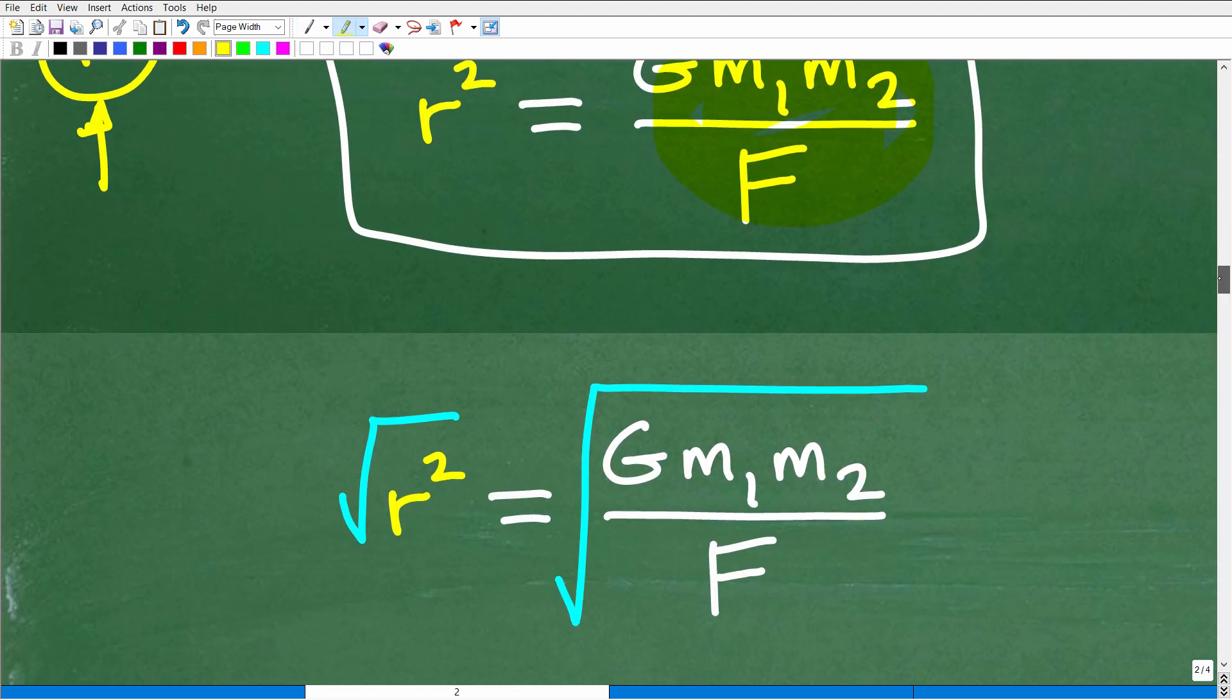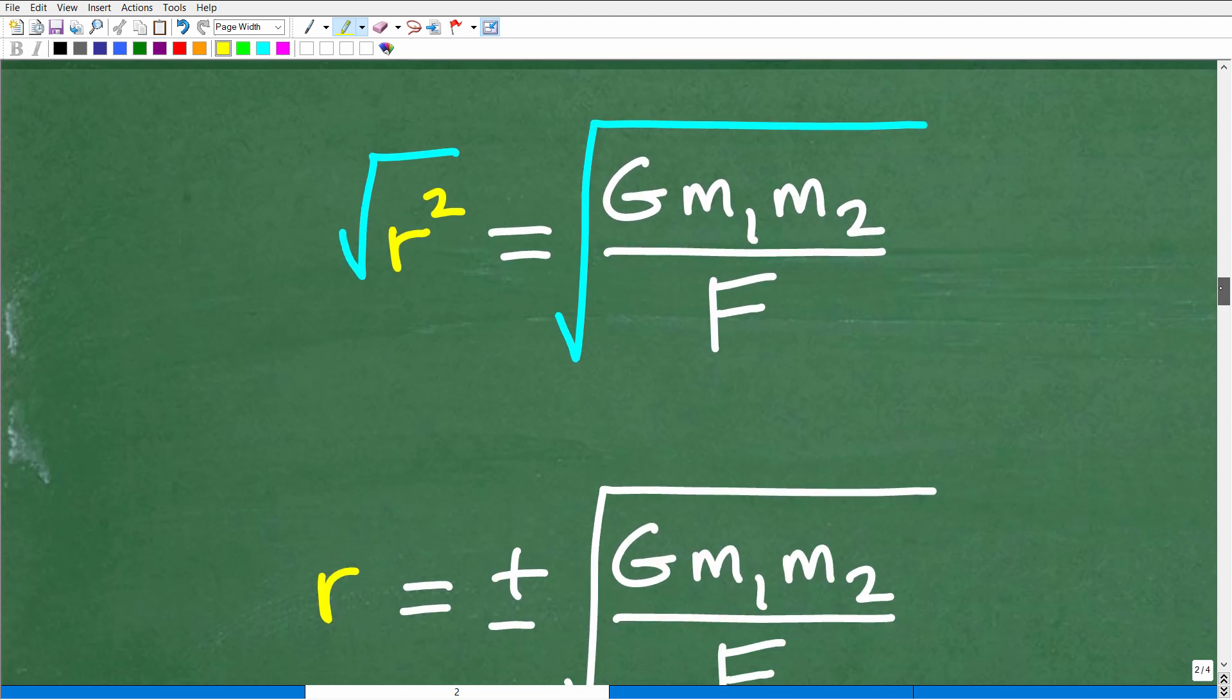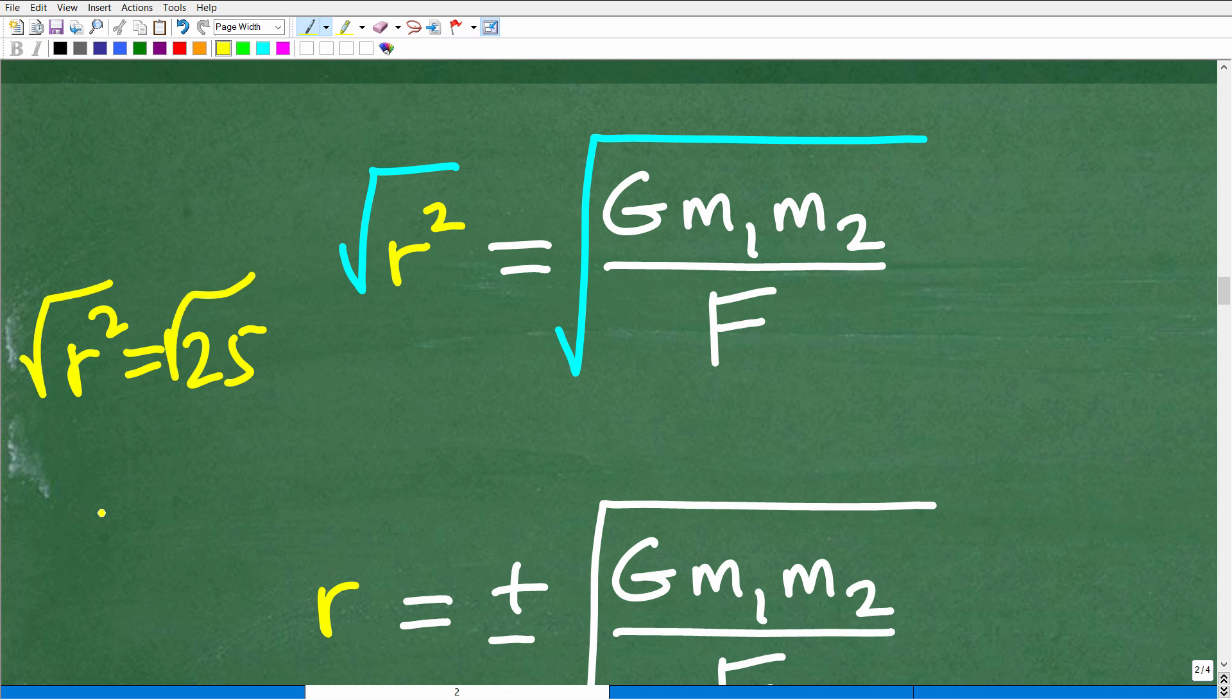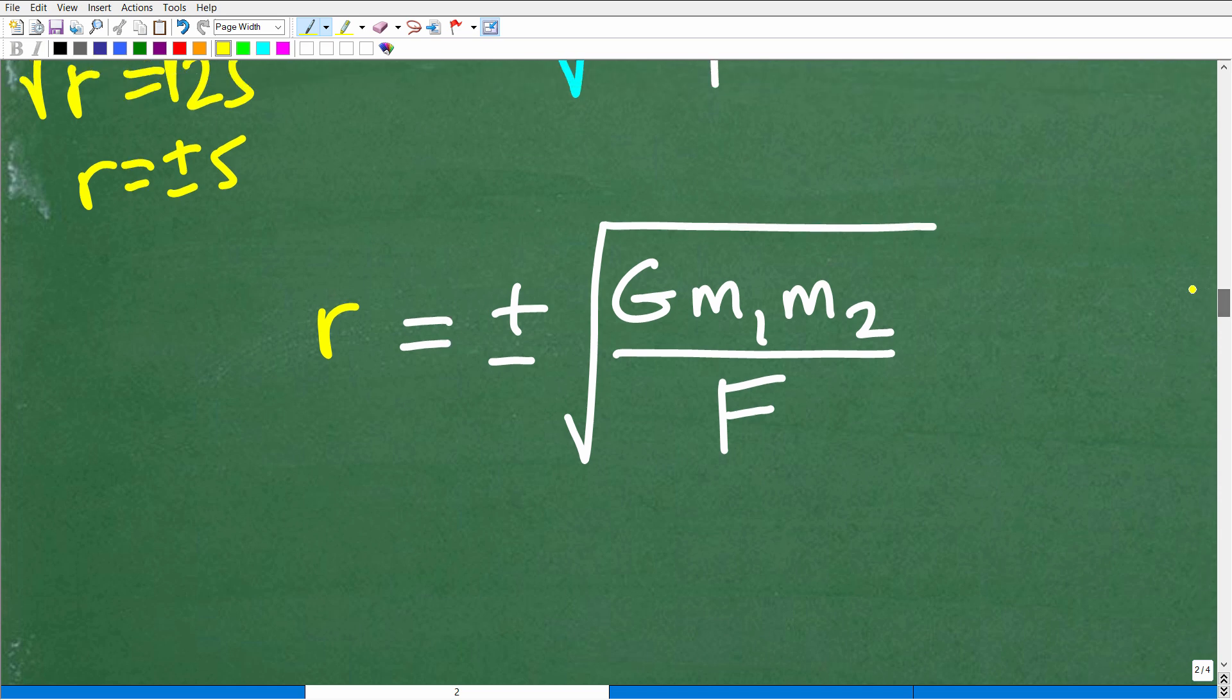So how do we solve for R when we are given R squared? Easy, we're going to take the square root of both sides. So in other words, if I gave you R squared is equal to 25 to solve for R, you would just take the square root of both sides. So R is equal to plus or minus five. In this case, R is going to be equal to plus or minus all this kind of good stuff right here.